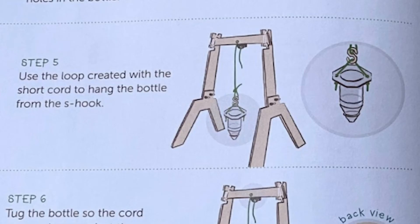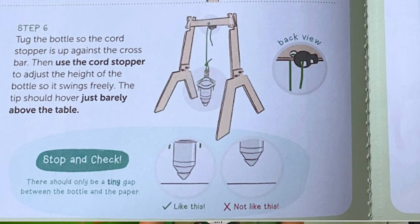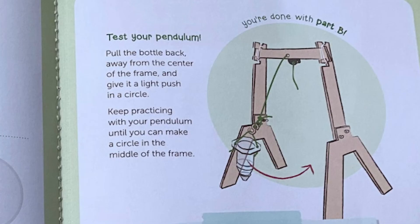Step five: use the loop created with the short cord to hang the bottle from the S hook. Step six: tug the bottle so the cord stopper is up against the crossbar, then use the cord stopper to adjust the height of the bottle so it swings freely. The tip should hover just barely above the table. Stop and check here to make sure the bottom of the bottle is not touching your paper. Now you can test your pendulum by pulling the bottle back away from the center and pushing it towards the left to make it move in a circle. Practice making your pendulum move in a circle a few times.